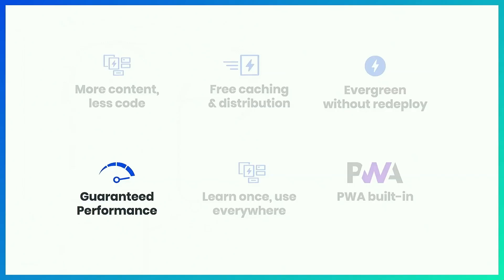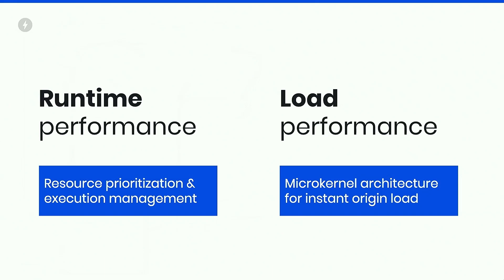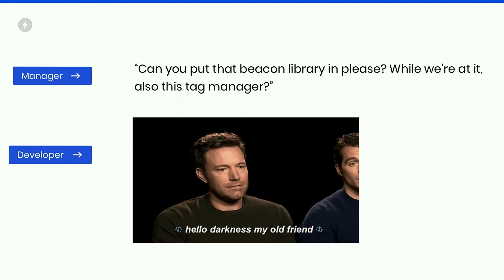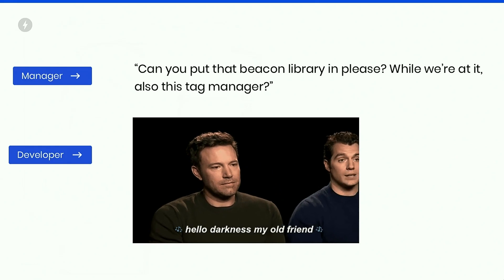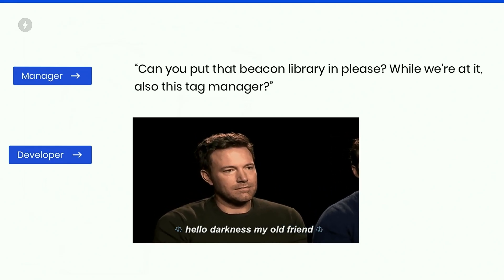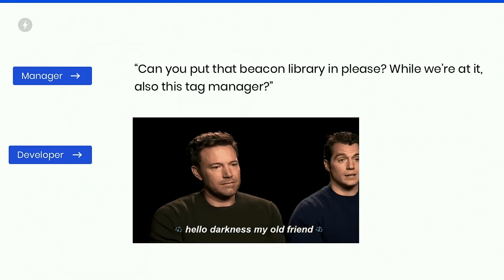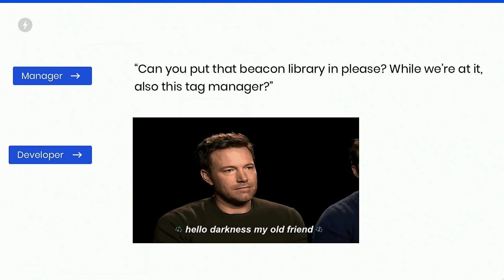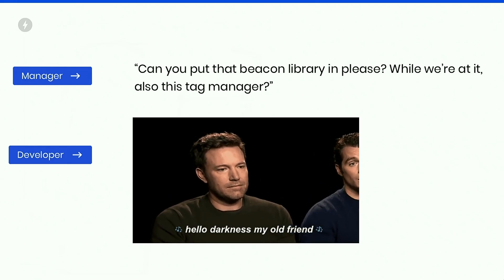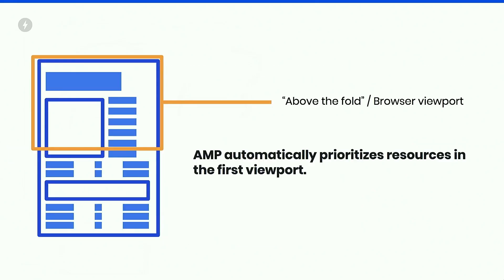Guaranteed performance — this was well known about AMP before, that it solved a performance issue, both runtime performance and load performance. Runtime performance: we solved things like resource prioritization and execution management. As a developer, if you're told to put a tag manager on your page, you're giving away the keys to your site — you become a sad Batman. This is why AMP: we automatically prioritize resources in the first viewport.